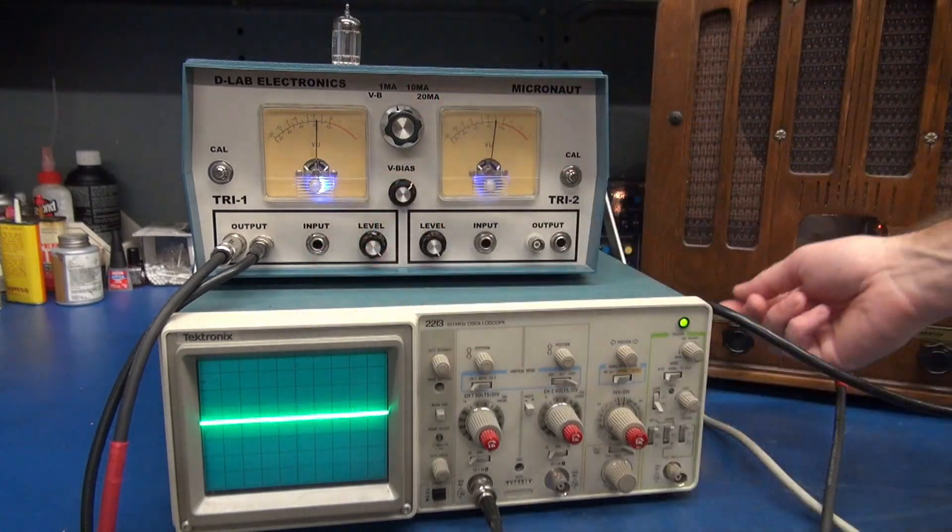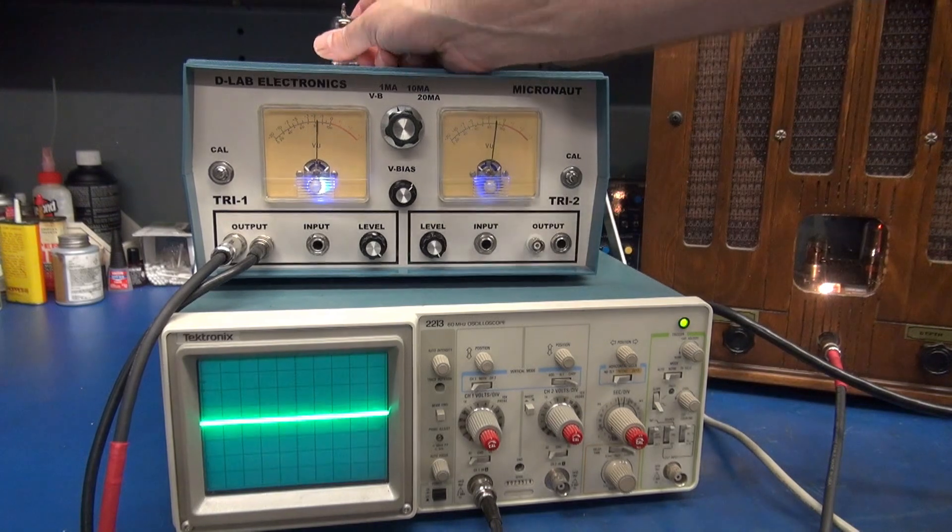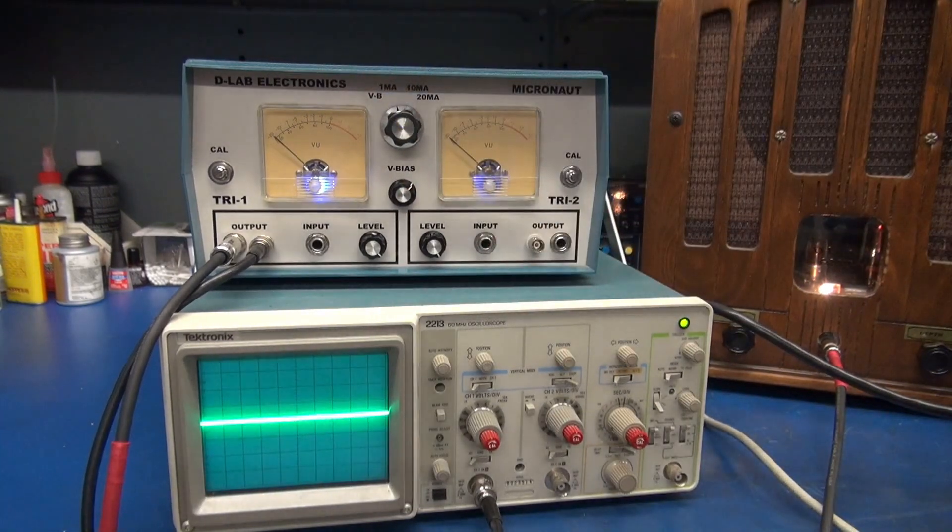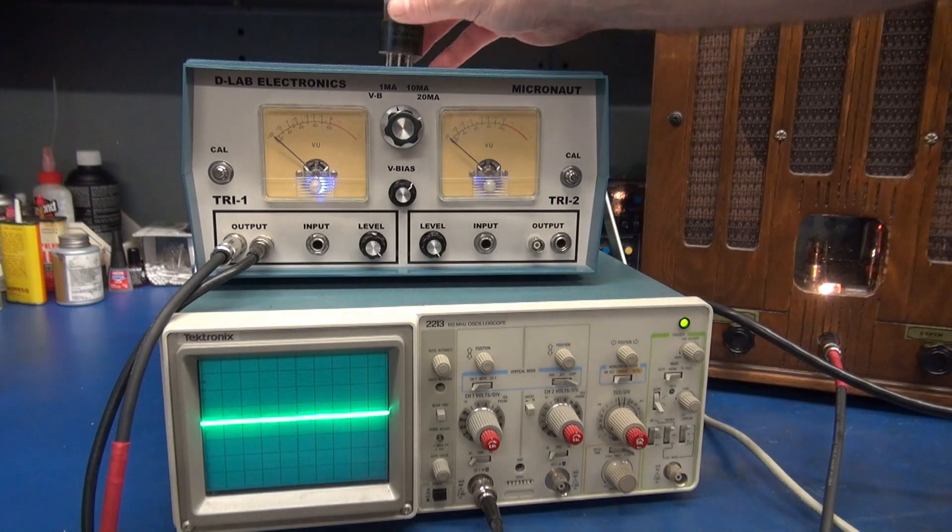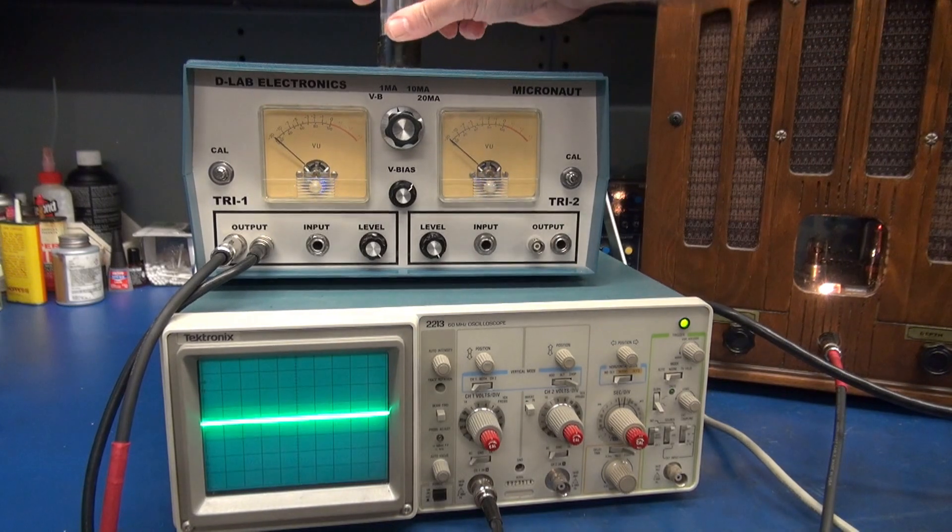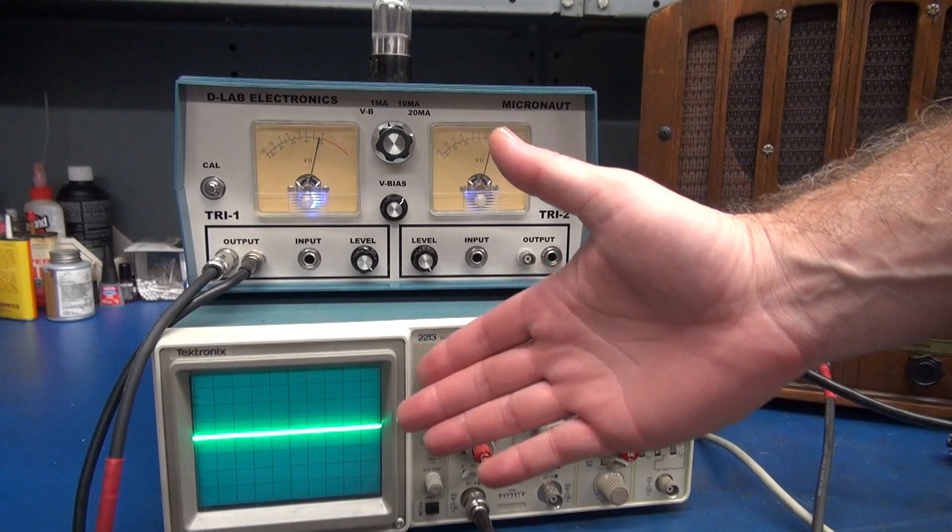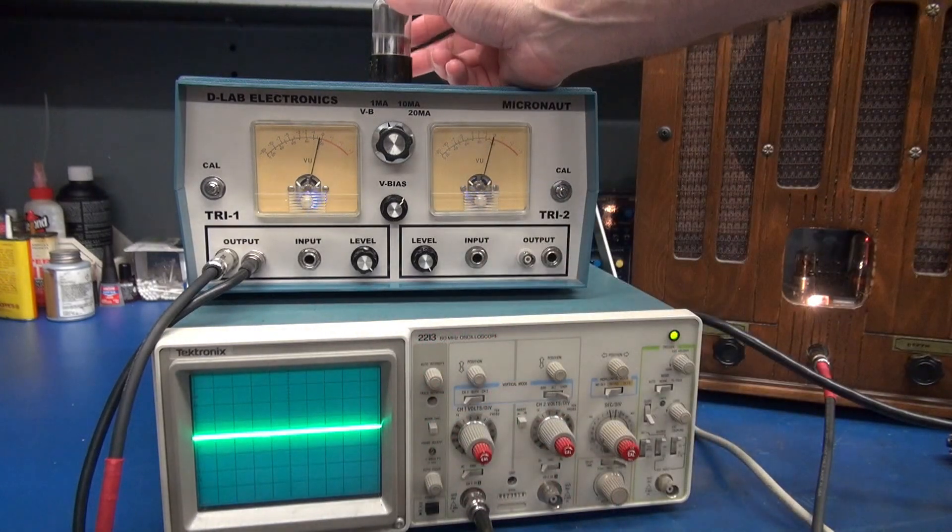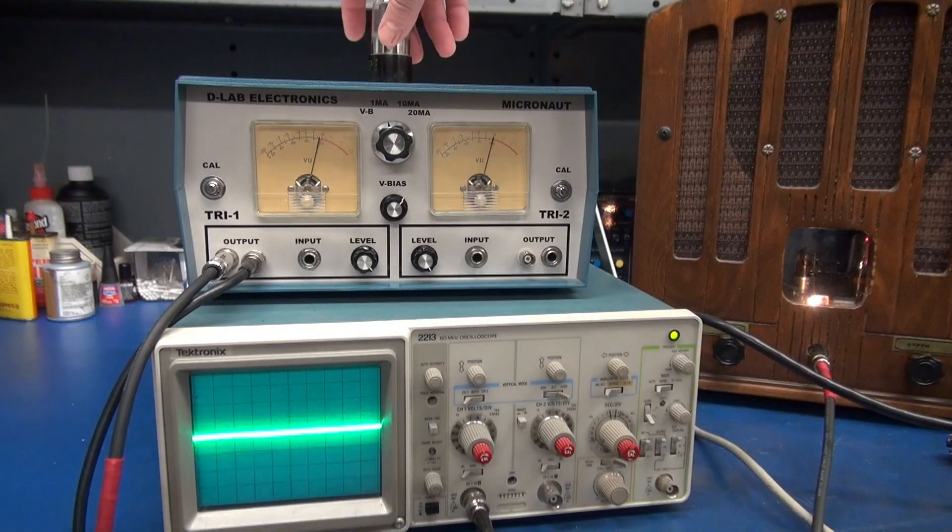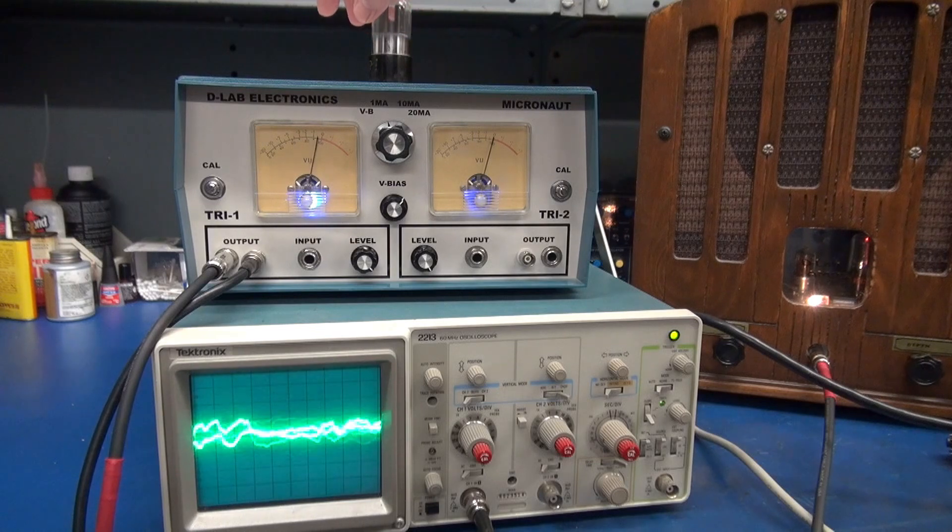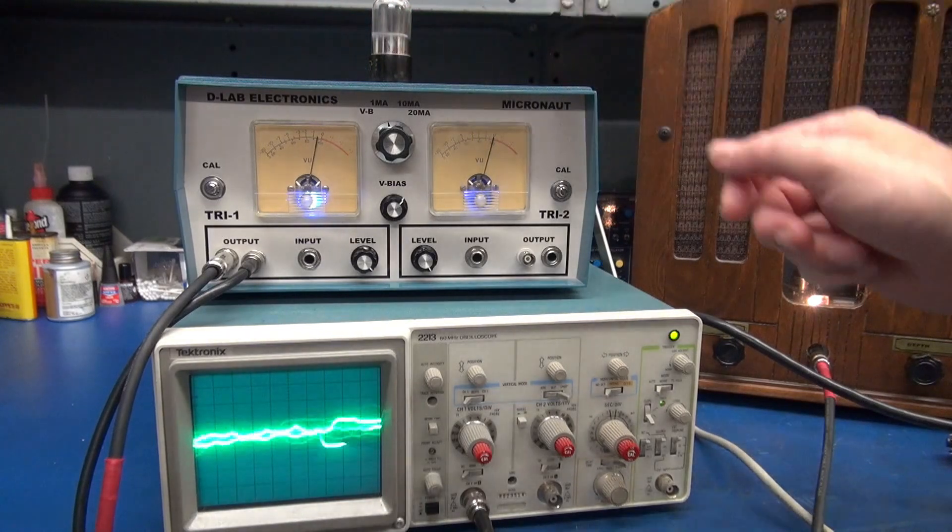Now I'm going to pull out the 12AX7, and I'm going to put in a 6SL7, which shares the same 1 milliamp setting as the 12AX7. So now I have the 6SL7 installed. Same thing. Let's take a look at the scope when I tap on the tube. You can see a lot of activity. Look at that. She's going nuts. Look at the meter. This tube has issues.